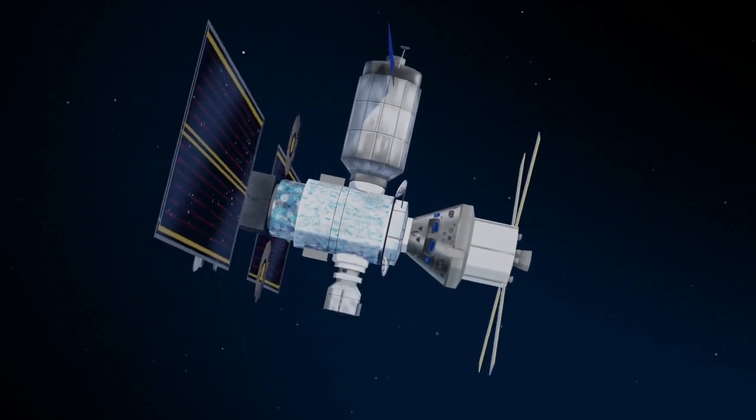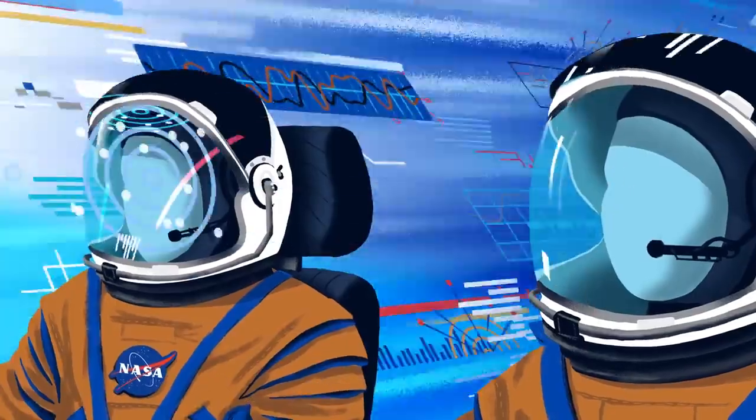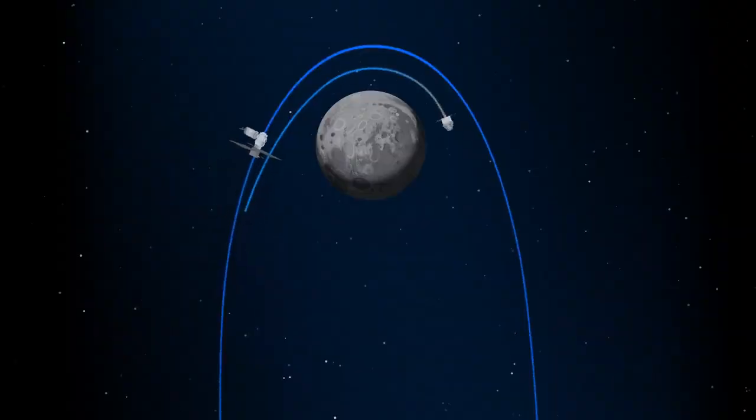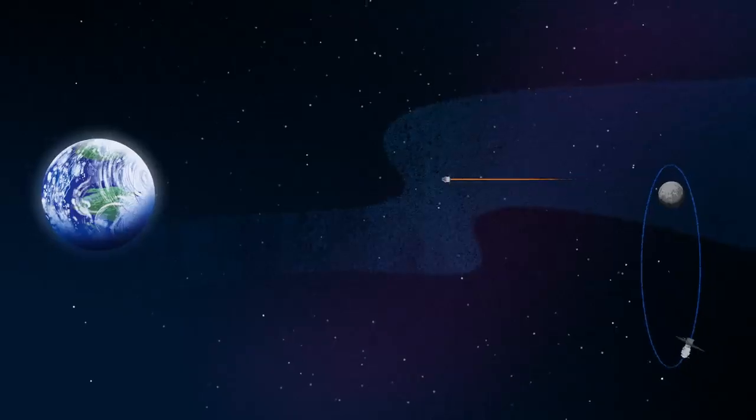Once back aboard the Orion spacecraft and undocked from Gateway, the crew fire their engine once to break out of the halo orbit and once again to sling the spacecraft around the Moon, placing it on a multi-day trajectory back towards Earth.